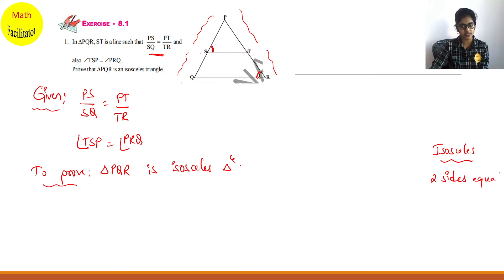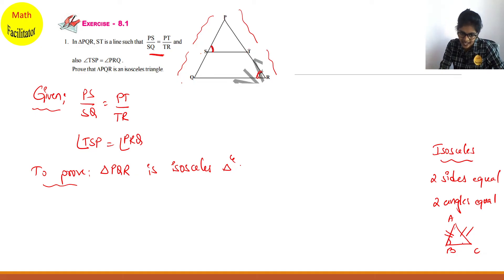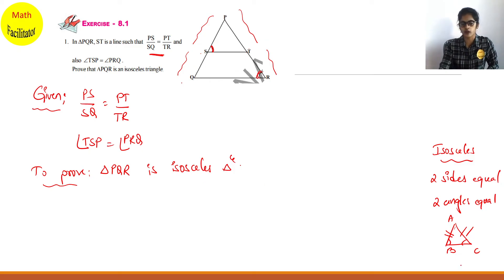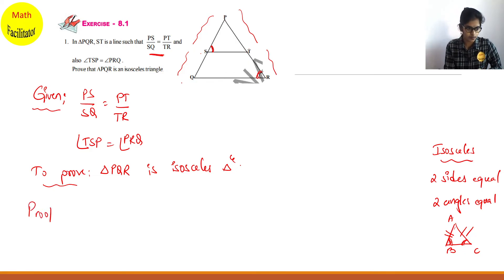Two sides have to be equal and two angles are equal. For example, in triangle ABC, if AB = BC, then angle B = angle C. So if you can prove that two angles are equal, then you can say that ABC is an isosceles triangle. That is what we are going to prove now.